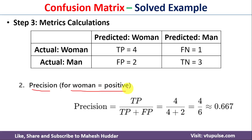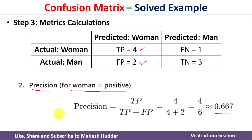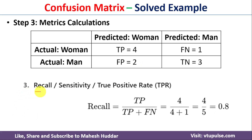Next we find precision for the positive class (woman). Precision is calculated as true positive divided by (true positive + false positive). True positive = 4 and false positive = 2, so 4 divided by (4 + 2) = 4/6 = 0.667.